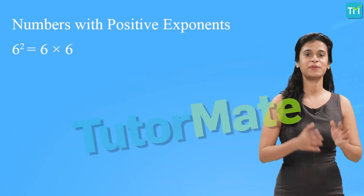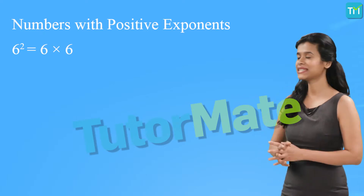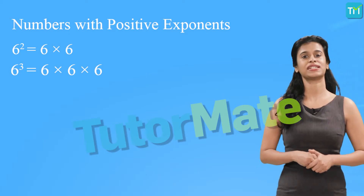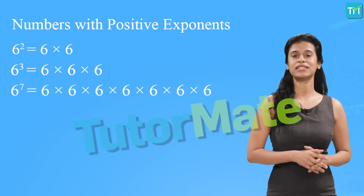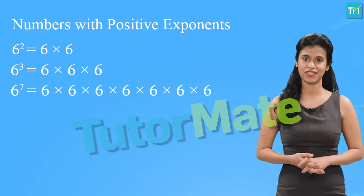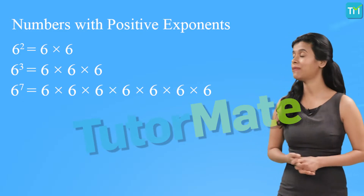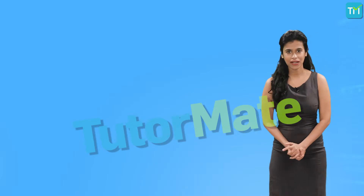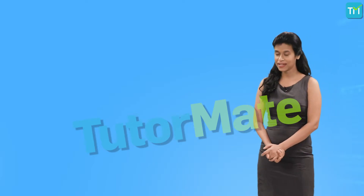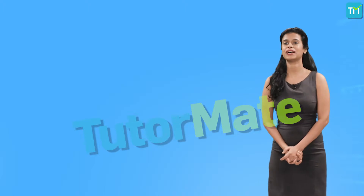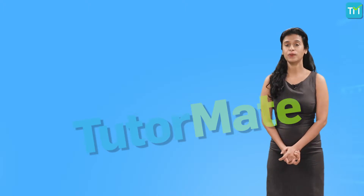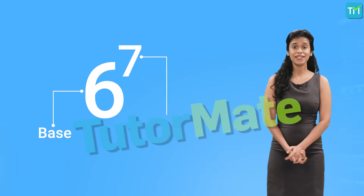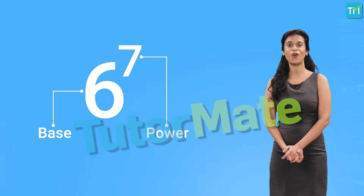The term 6 squared is basically equal to 6 into 6. And then we have 6 cubed which is equal to 6 into 6 into 6. And what about 6 raised to 7? It will be equal to 6 multiplied by 6 a total of 7 times. So whenever we express a number as something raised to something else, it is said to be expressed as a power. In our example 6 raised to 7, 6 is called the base and 7 is called the index or the power of 6.